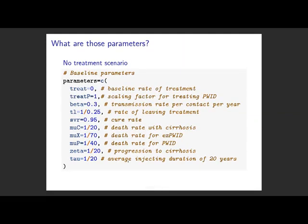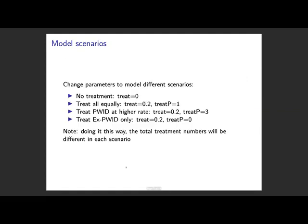To run different scenarios we vary the parameters. In the baseline no-treatment scenario, treatment equals zero. We also set transmission rate, cure rate, and death rates. When we treat everyone equally, the treatment rate is set to 20 per year. We can also model treating people who inject drugs at a higher rate or not treating them at all - all these scenarios can be explored with this type of model.